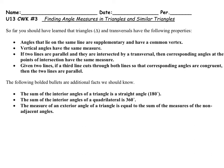The following bolded bullets are additional facts we should know. The sum of the interior angles of a triangle is a straight angle, so all three should add up to 180 degrees. The sum of the interior angles of a quadrilateral is 360 degrees, so all four angles added together equal 360 degrees. The measure of an exterior angle of a triangle is equal to the sum of the measures of the non-adjacent angles.